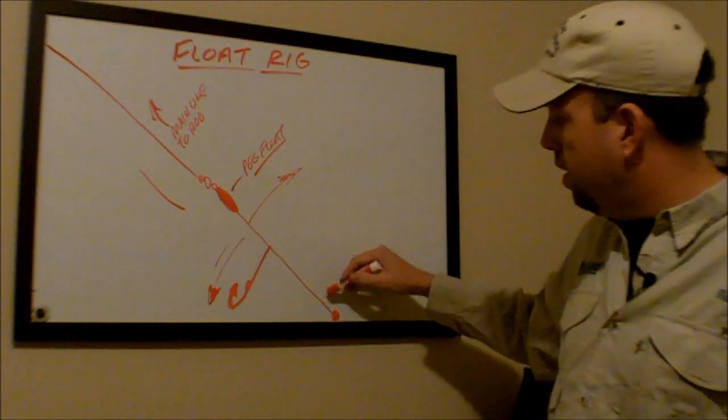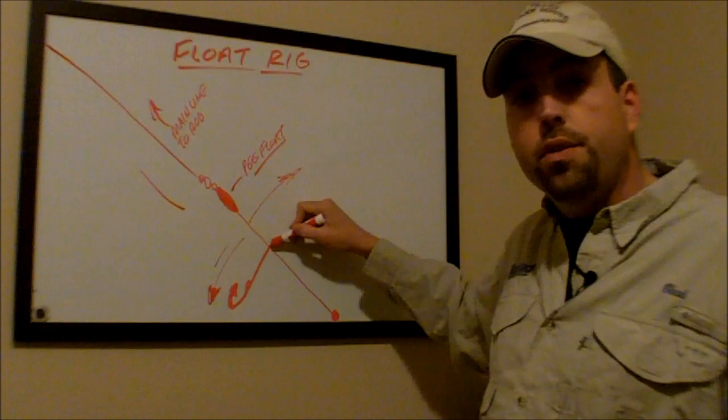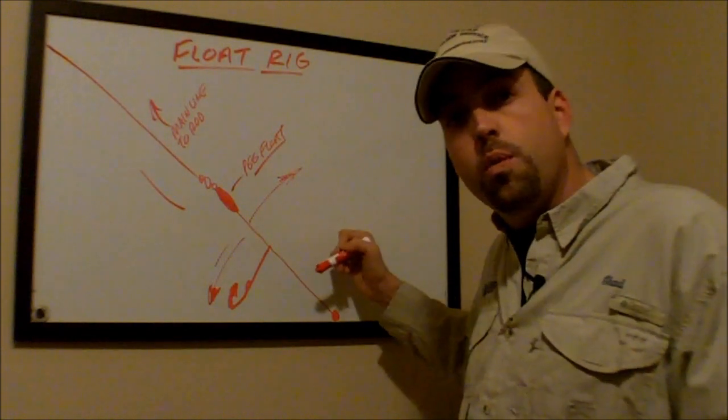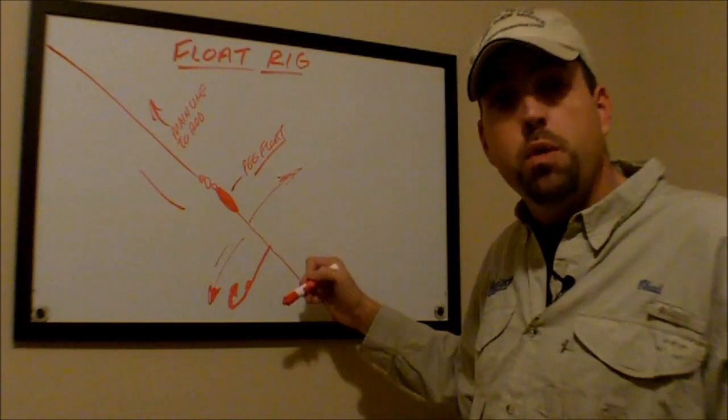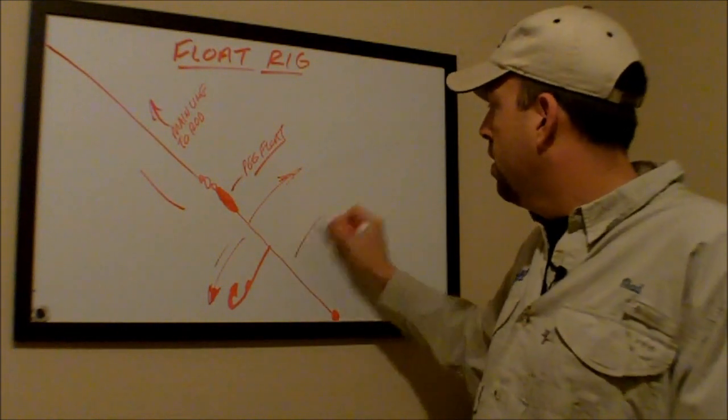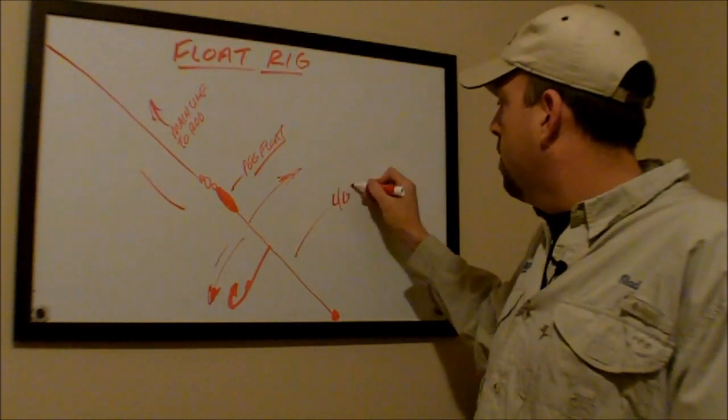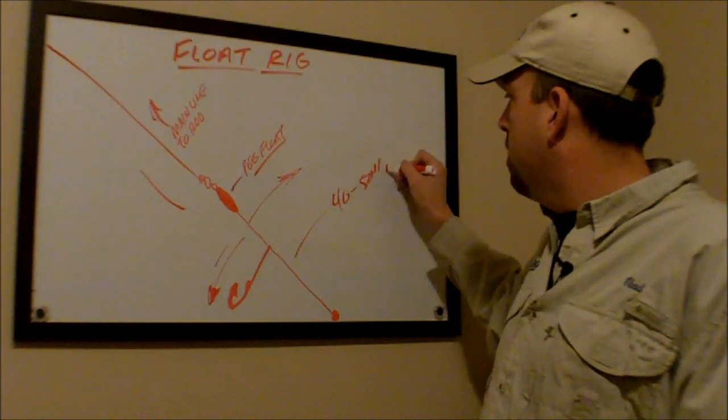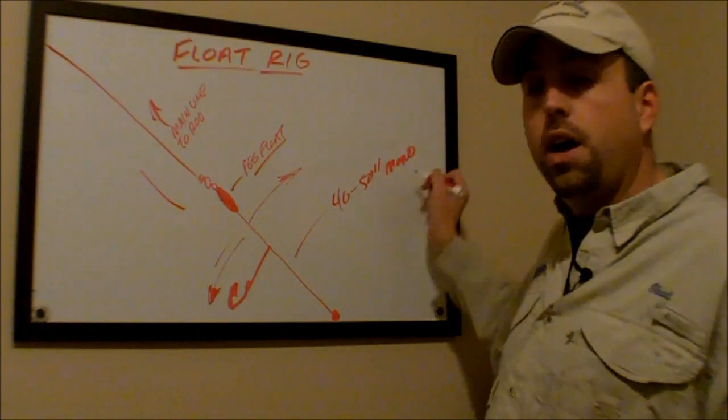The length of line from your weight to your dropper is going to depend on where the catfish are in the water column and how deep you want to be fishing. And I would use 40 to 50 pound mono for this kind of setup.